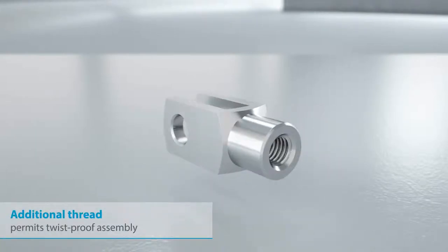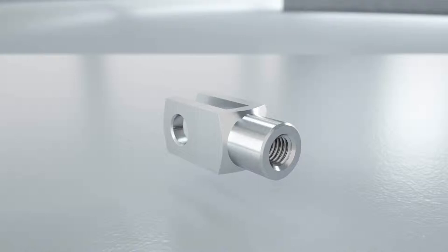An additional thread on the shaft permits twist-proof assembly. For purposes of the application, the clevis is also fixed using a threaded pin, as per DIN 913 and DIN EN ISO 4026, and is therefore installed in a way that prevents twisting and rotation.